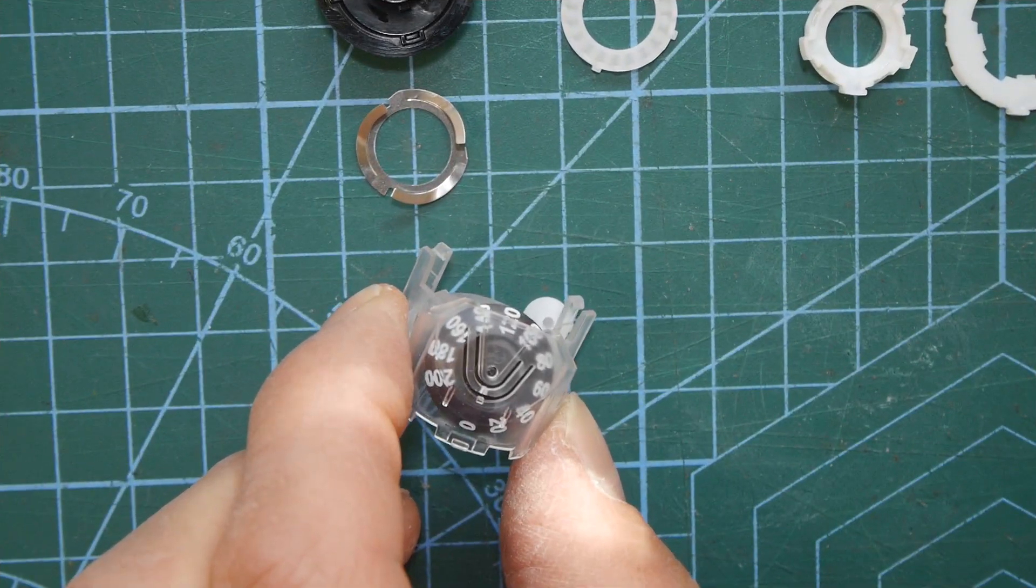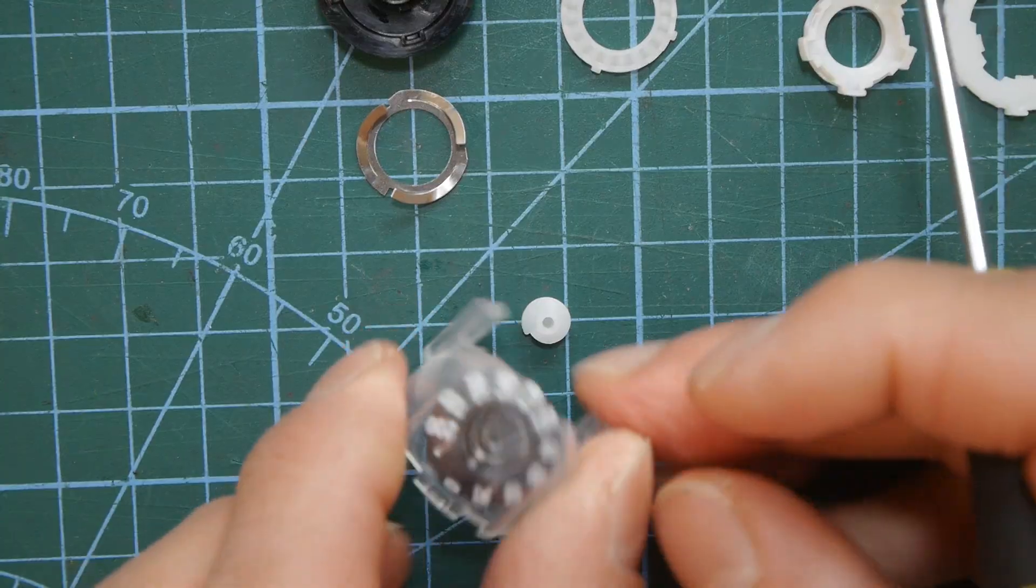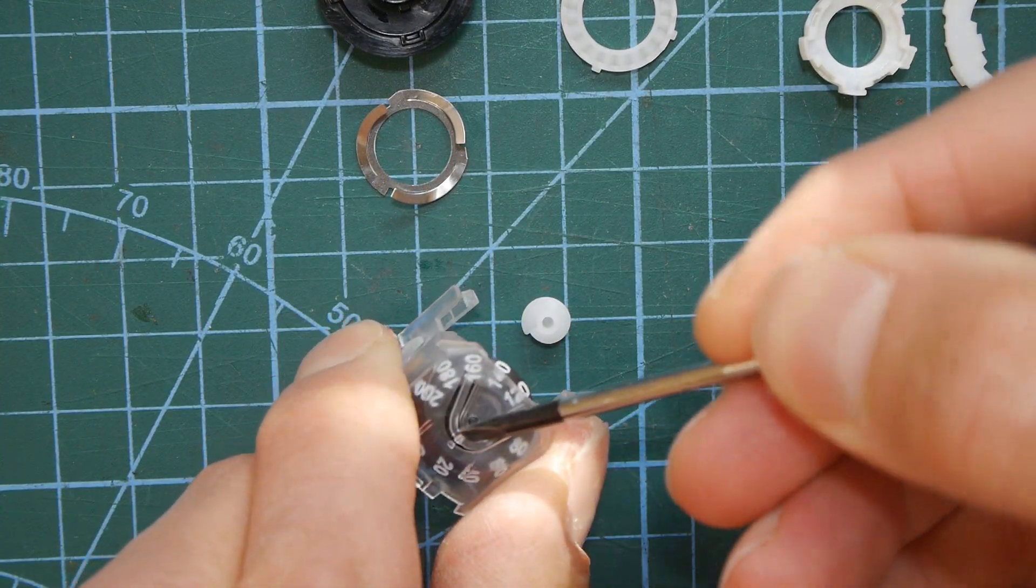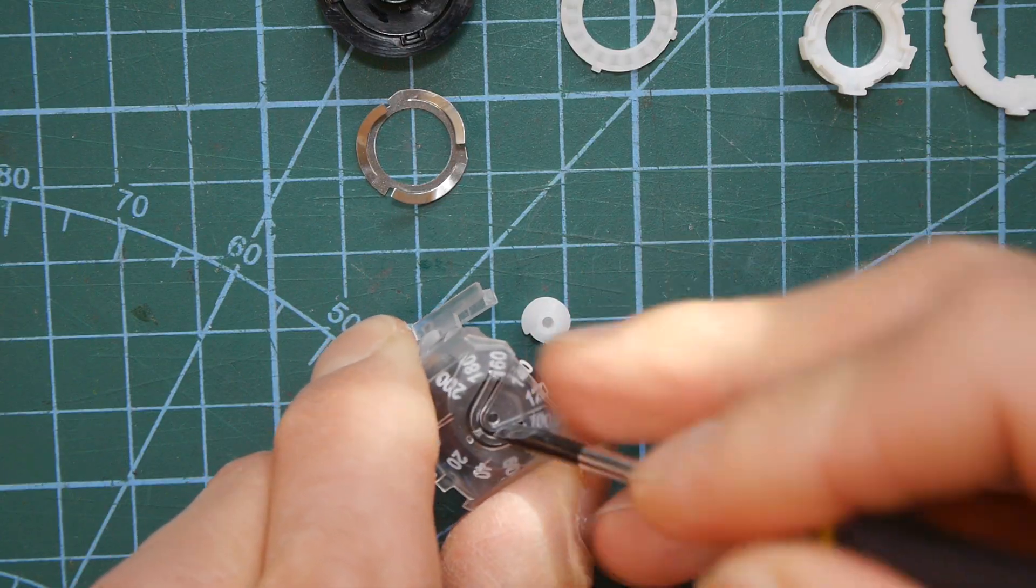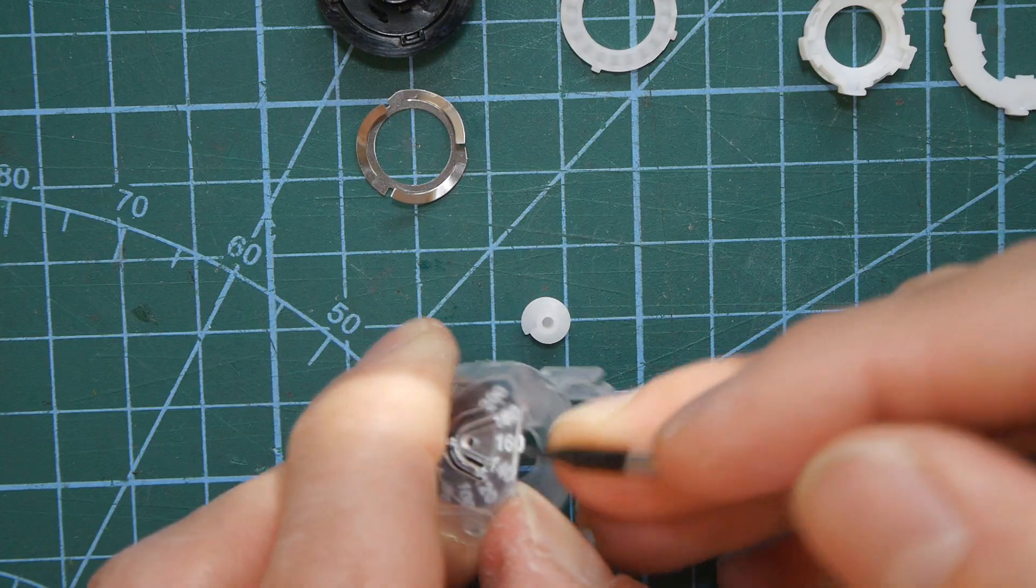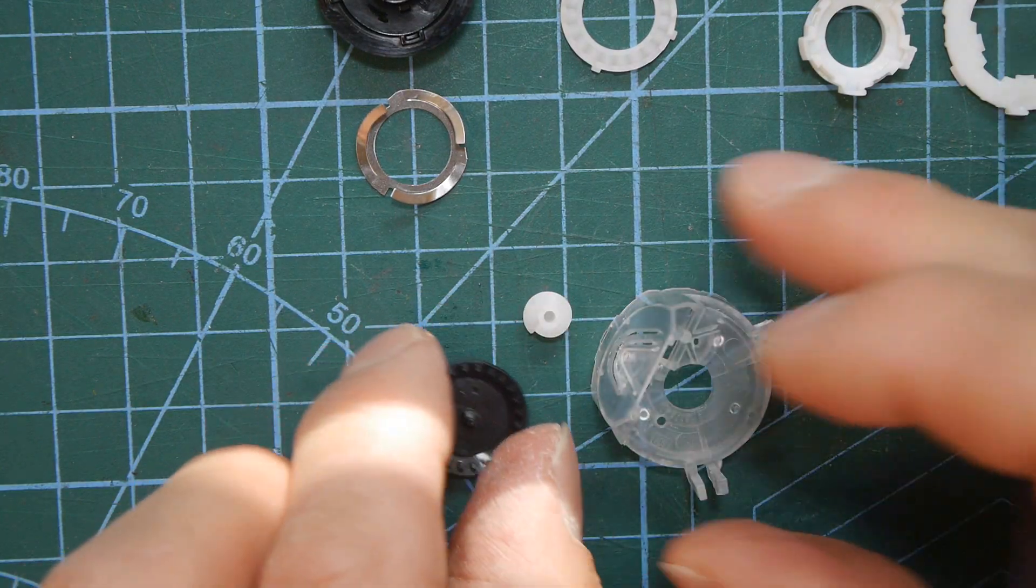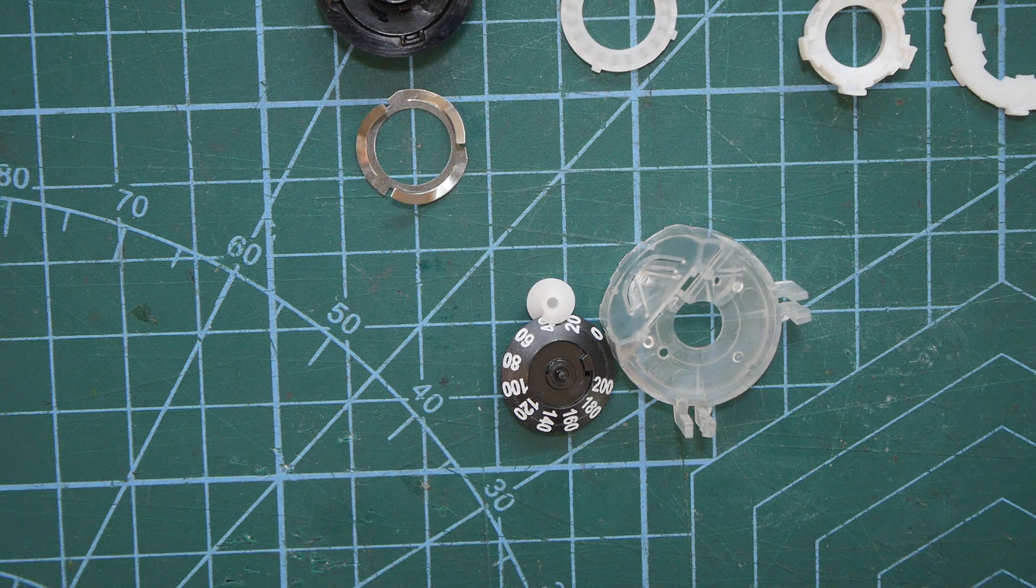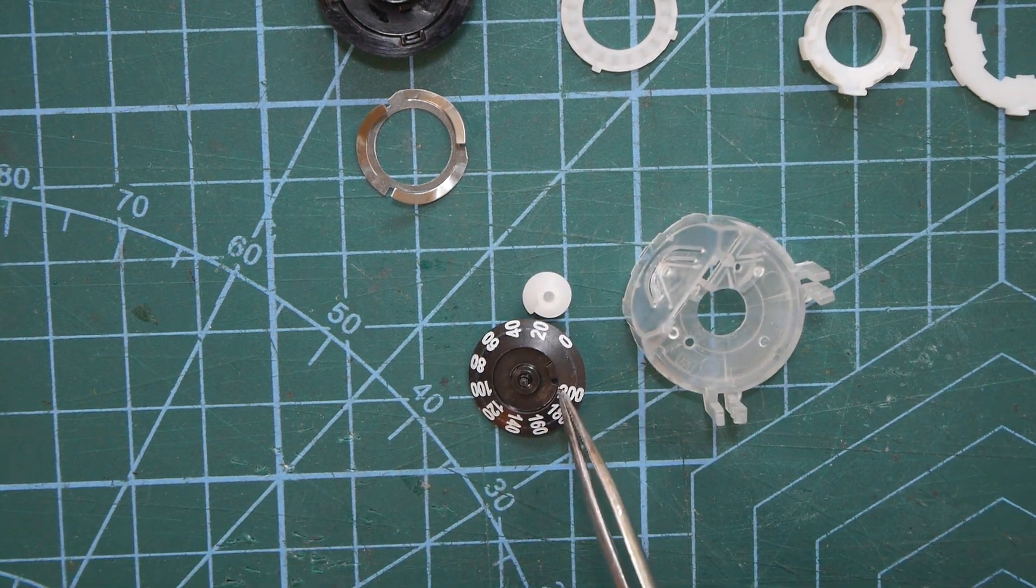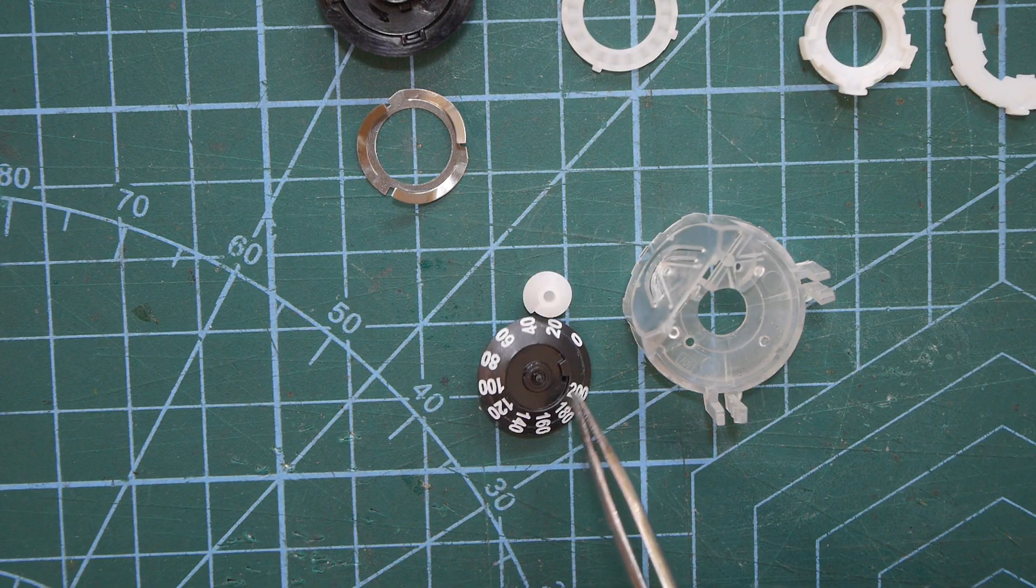So should we see if we can get the counter wheel out now and that's sort of easier said than done because it's sitting under that bit there. Very fiddly, oh there we go so that's come out and so you can see the numbers on the counter wheel.